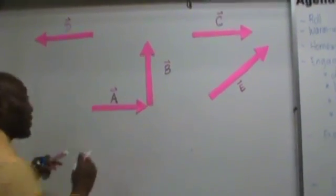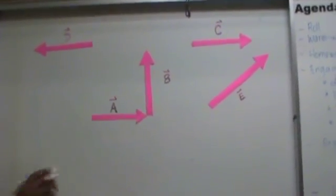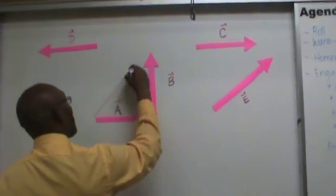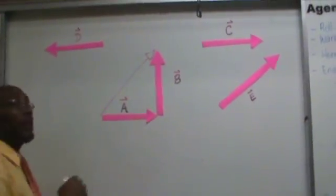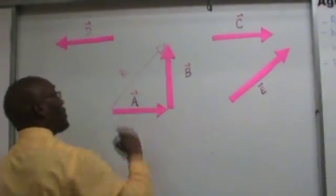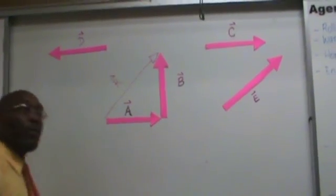Let's draw the resultant. Once again, the way you draw the resultant is you draw a line from the tail of the first vector to the tip of the second vector. That is your resultant. And there you have it, we have a right triangle.